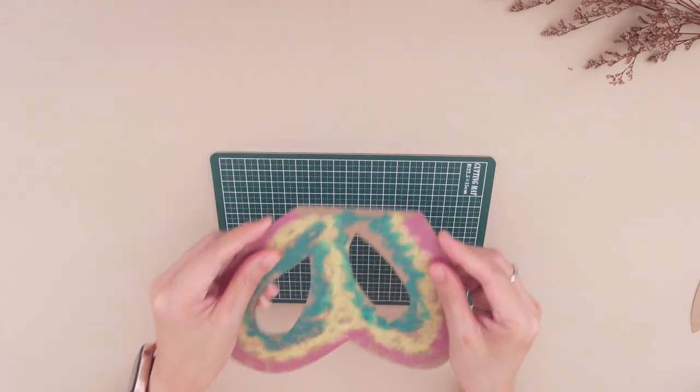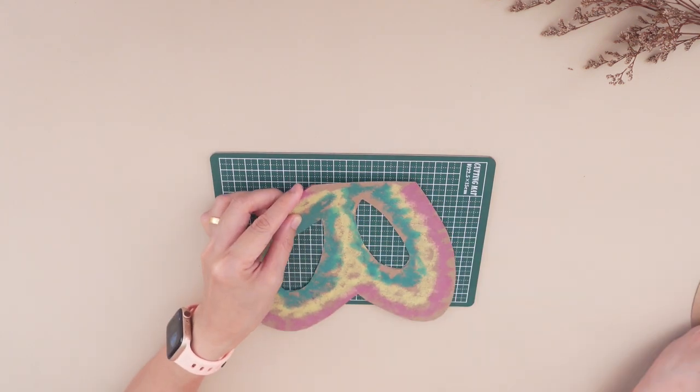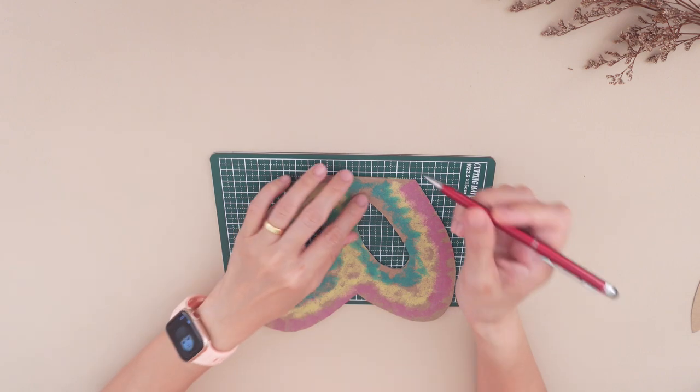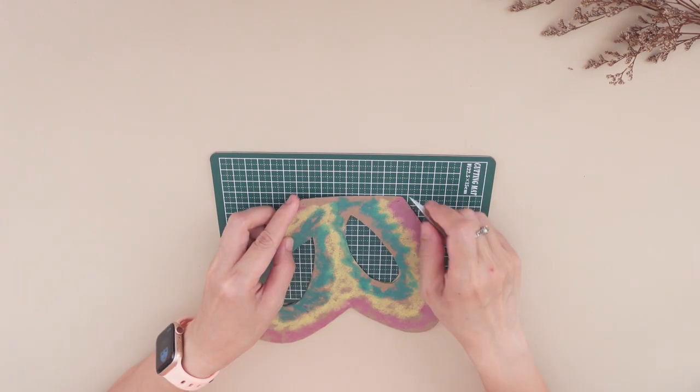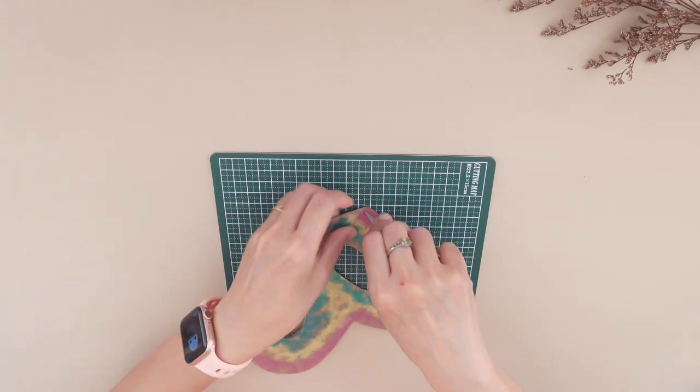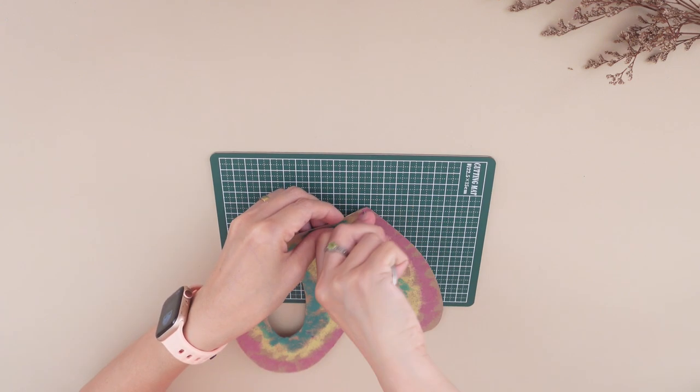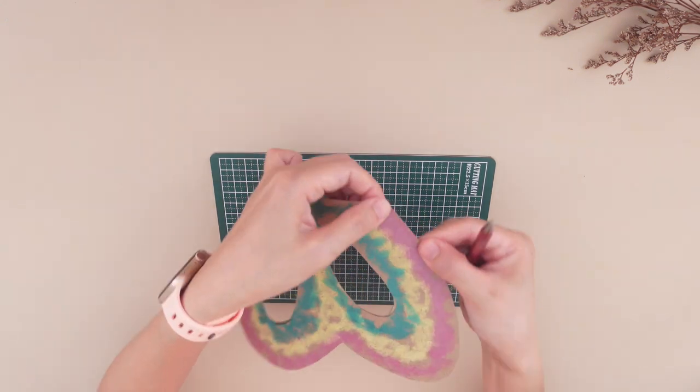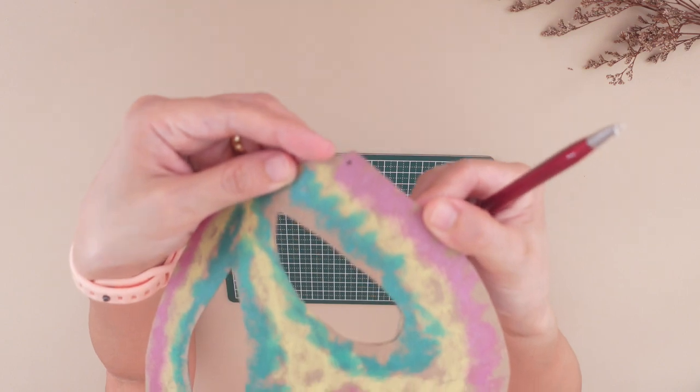Then take the two wings and align them together using a cutting mat and an old pen or any pointed object. Make a hole on each corner. We need to make sure that both wings have their holes aligned together.